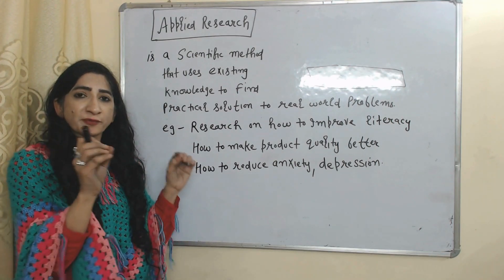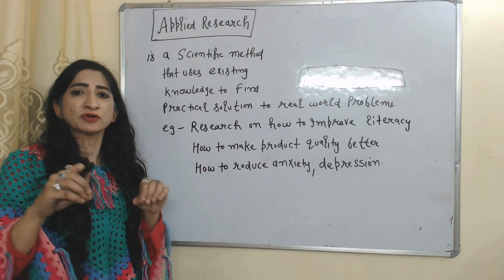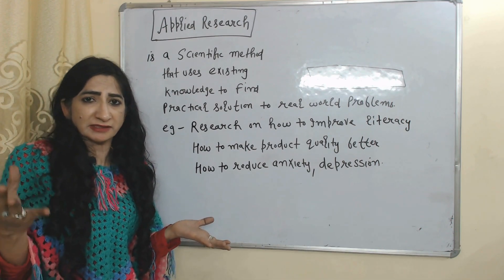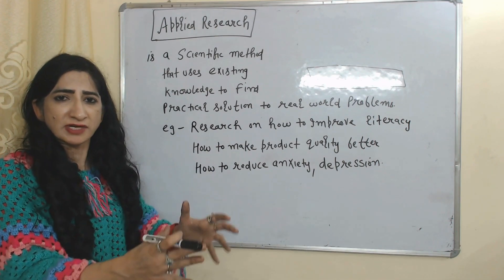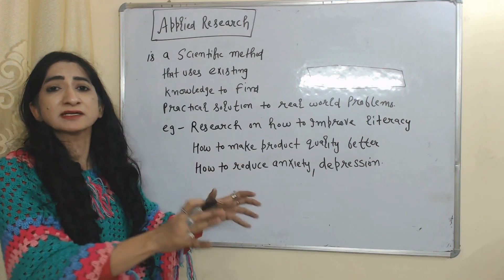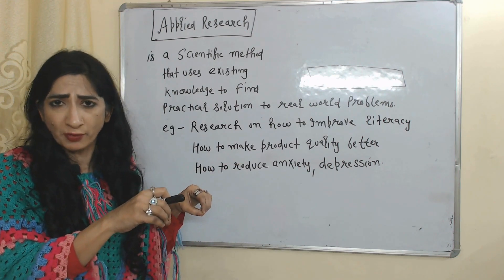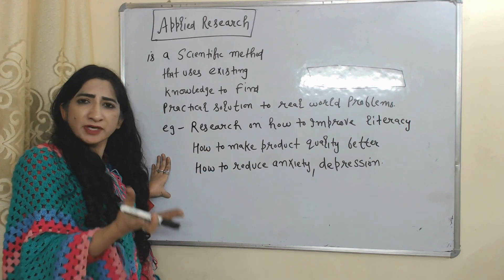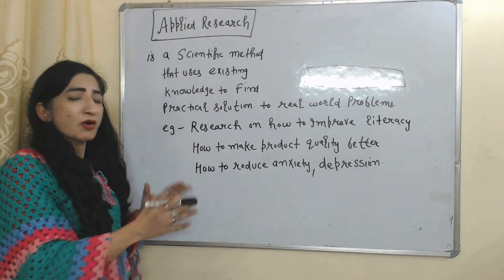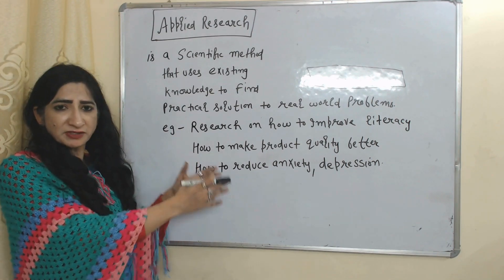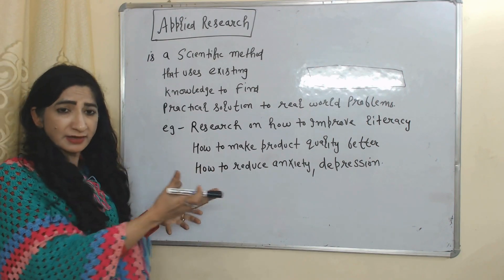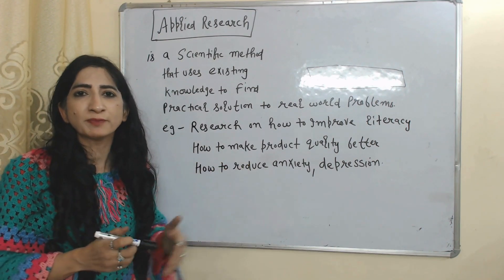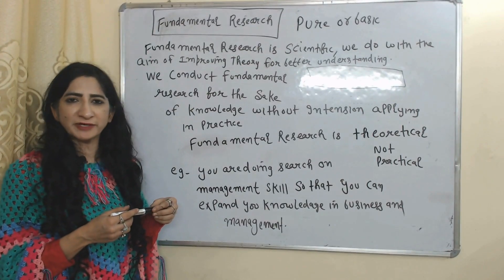Next is applied research. We use applied research to find out practical solutions to real-world problems. It is a scientific method that uses existing knowledge to find practical solutions. For example, research on how to improve literacy, how to make product quality better, and how to reduce anxiety and depression would be called applied research, because here we are trying to find practical solutions to real-world problems.